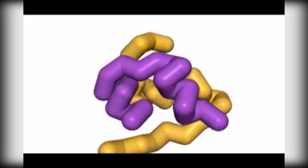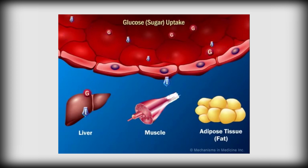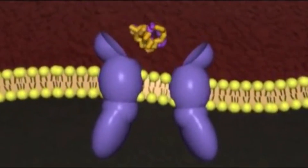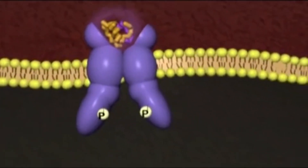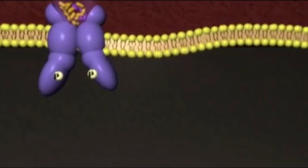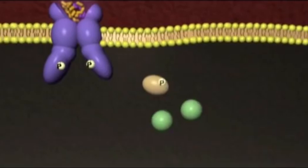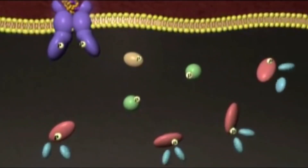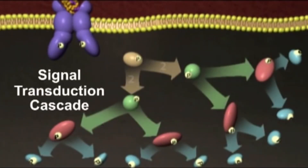The insulin in the bloodstream binds to the extracellular domain of receptor proteins found on the surface of liver, muscle, and adipose tissues. This binding triggers the autophosphorylation of the intracellular domain. Then the substrate signaling protein phosphorylates other downstream proteins, leading to amplification of the signal at each step. This overall signaling process is called the signal transduction cascade.